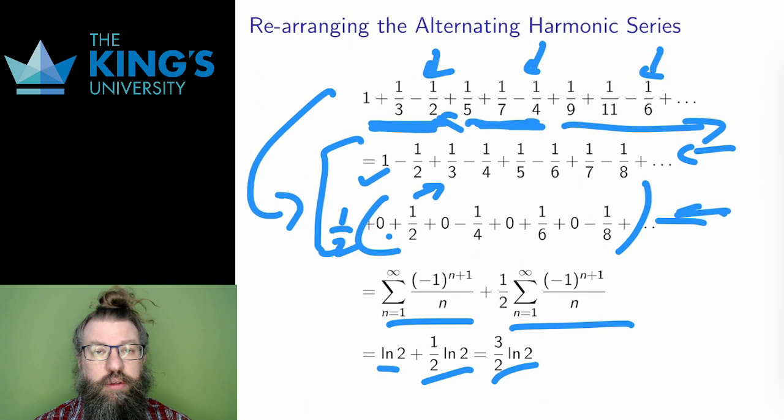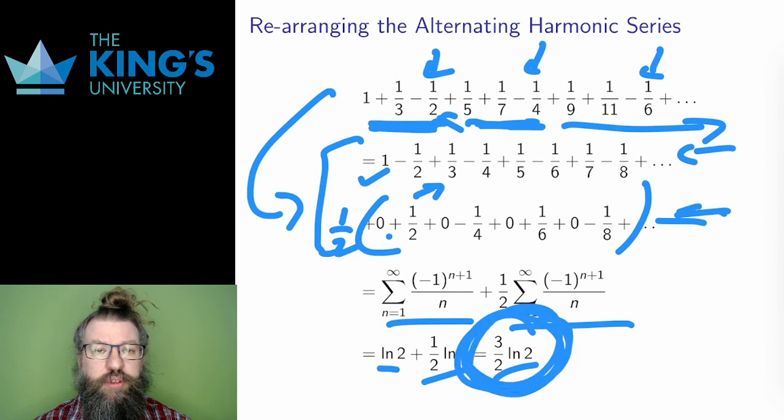What has happened here? I have reordered the numbers, taking two odds and then an even. This still captures all the same terms, but they are reordered. However, by reordering the sum I have changed the result.